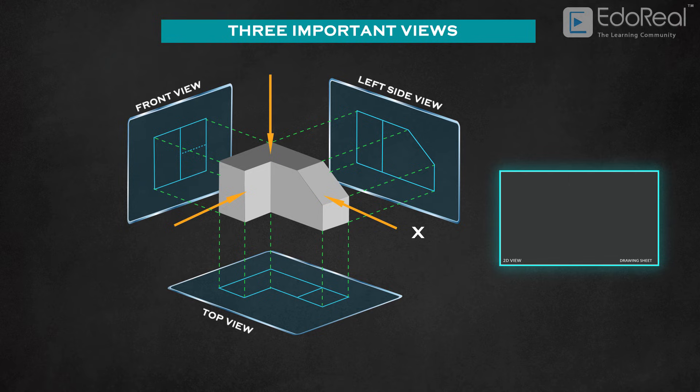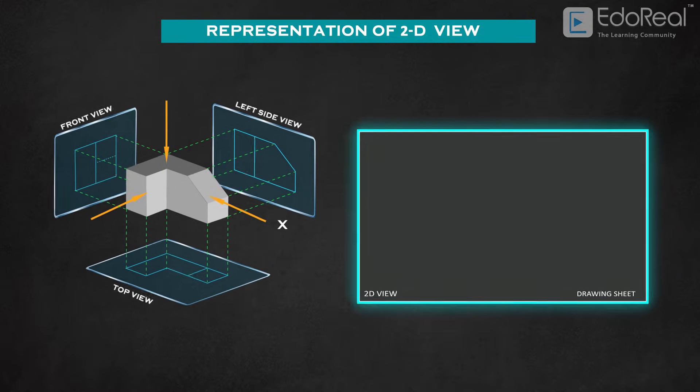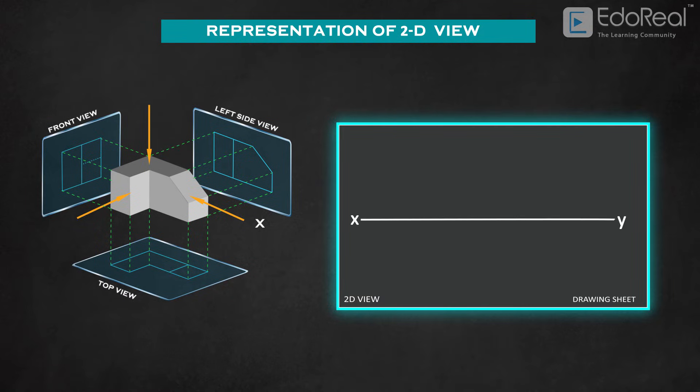Generally, we follow a format to represent the three views of an object on a drawing sheet. We first draw a reference line XY on the drawing sheet. The front view of the object is drawn above the reference line. The top view is drawn below the reference line.